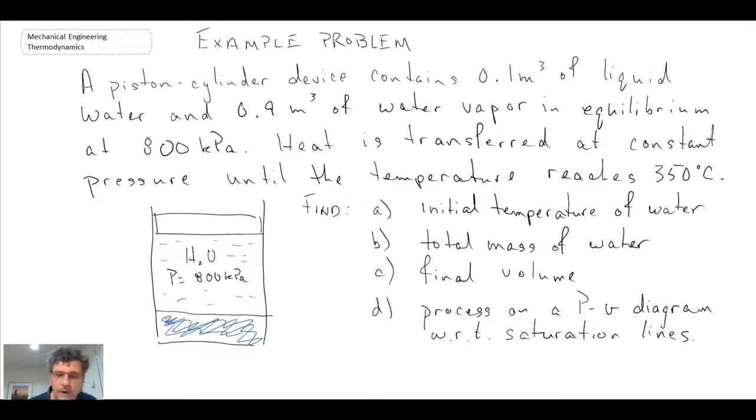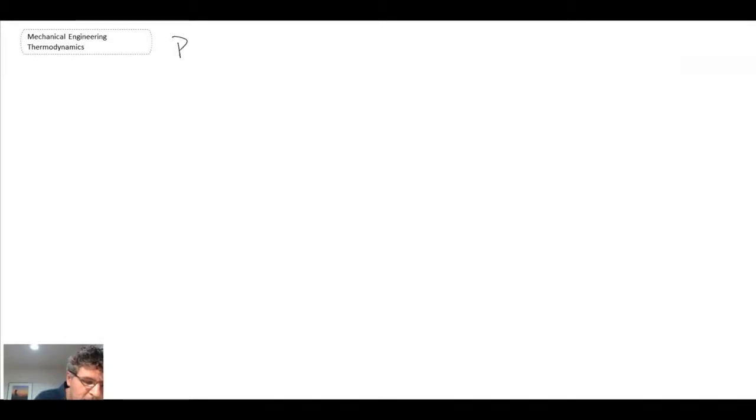So that's the problem that we are going to solve. When you have a problem like this, the best thing to do is to begin by writing out the information that you know. So let's begin by writing out the information that we know. So we know that we have a piston cylinder device.